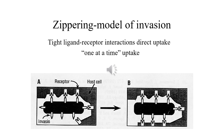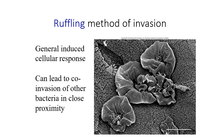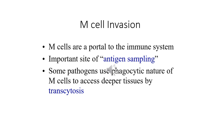There are a few mechanisms of invasion. The zipper mode involves tight ligand-receptor interaction with direct uptake, one at a time. Another method is M-cell invasion — microbes present in our gastrointestinal tract can enter via M cells in the gut epithelium and gain entry into the body.